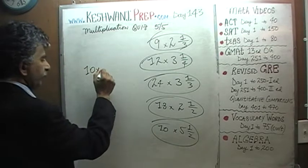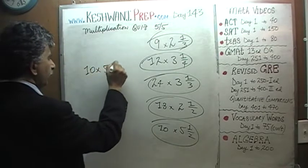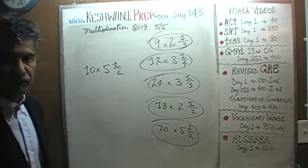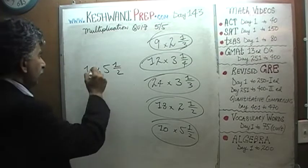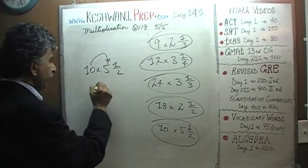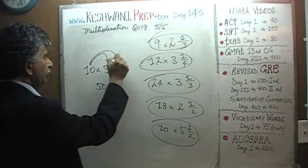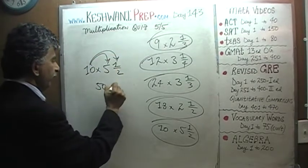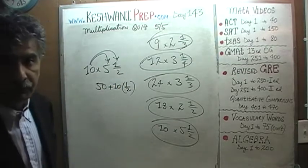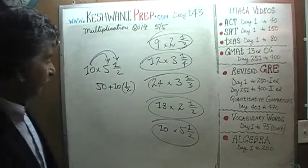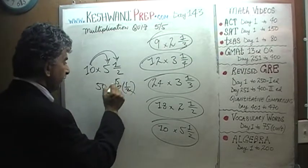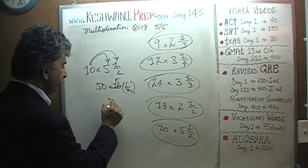Ten times five and a half: ten times five is fifty, and ten halves is five. So the answer is fifty-five.